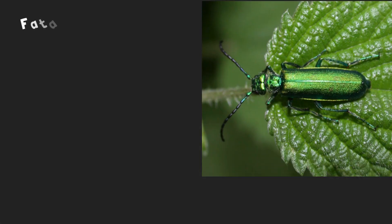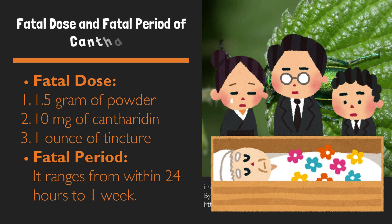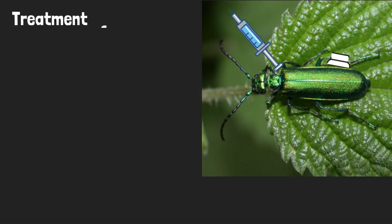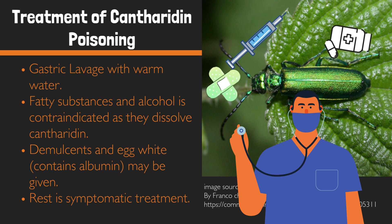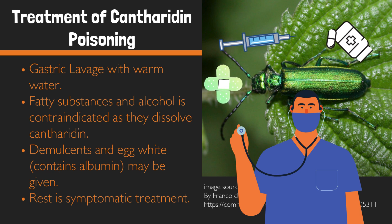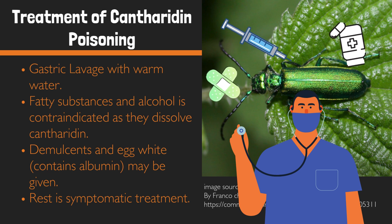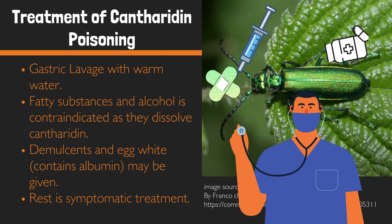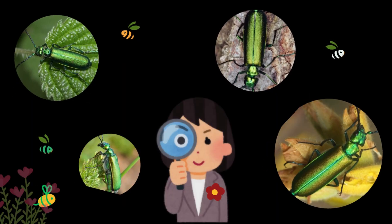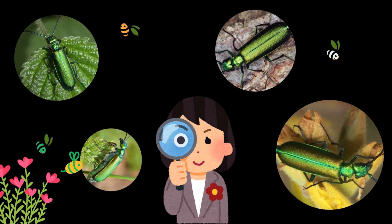Fatal dose and fatal period of cantharidin: the fatal dose is 1.5 grams of powder, 10 mg of cantharidin, or one ounce of tincture. The fatal period ranges from within 24 hours to one week. Treatment: gastric lavage with warm water; fatty substances and alcohol are contraindicated as they dissolve cantharidin. Milk, albumen, and egg white — which contain albumin — may be given. The rest is symptomatic treatment.